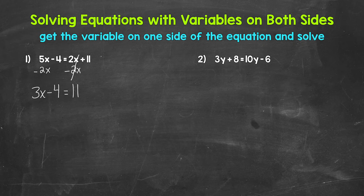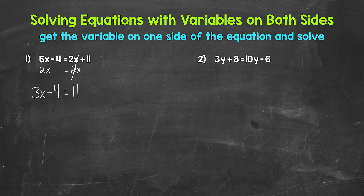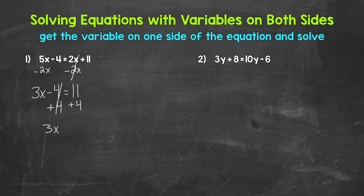So now we have 3x minus 4 equals 11. The variable is on one side — the left side only — and now we can solve. We need to isolate the variable x using inverse operations in reverse order of operations. So we need to undo the subtraction first. The inverse operation of subtraction is addition. So let's add 4 to both sides. On the left side, subtracting 4 and adding 4 cancel each other out, leaving 3x equals. On the right side, 11 plus 4 gives us 15.